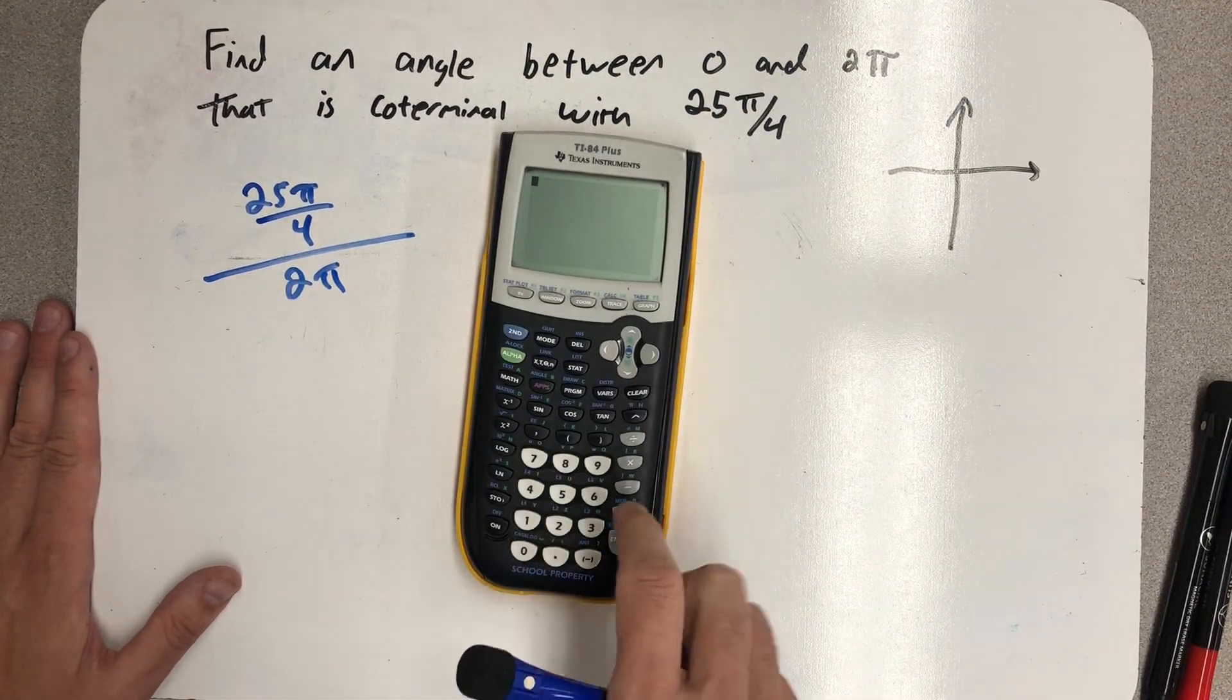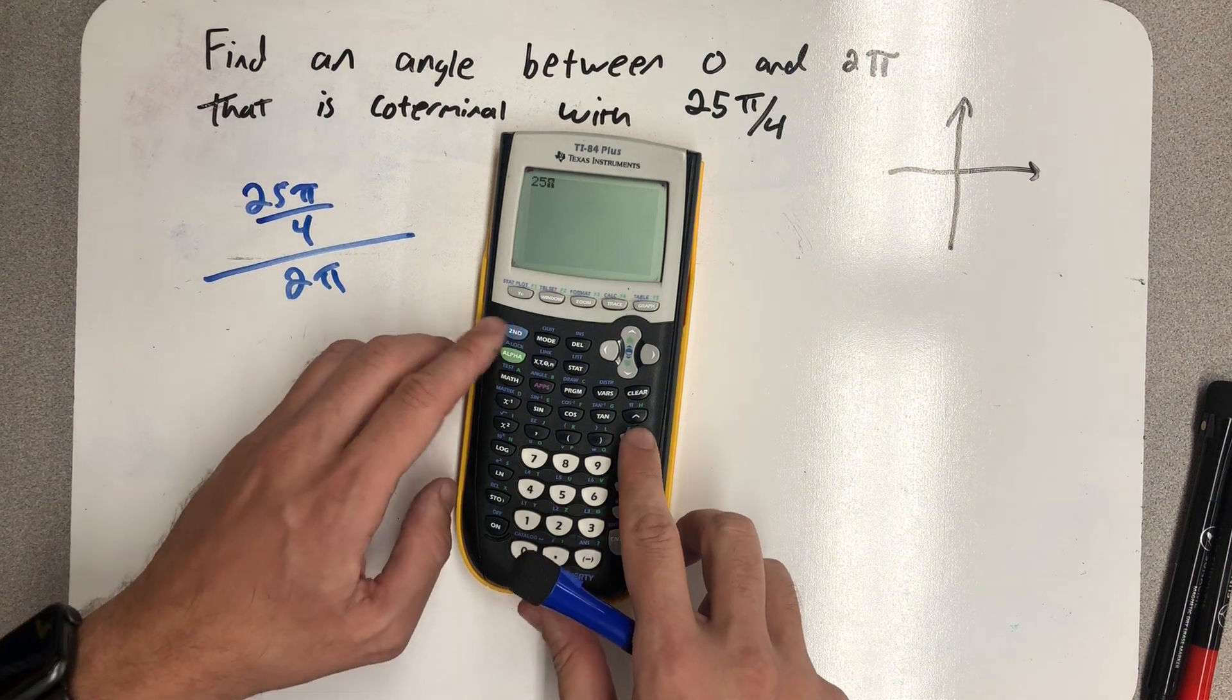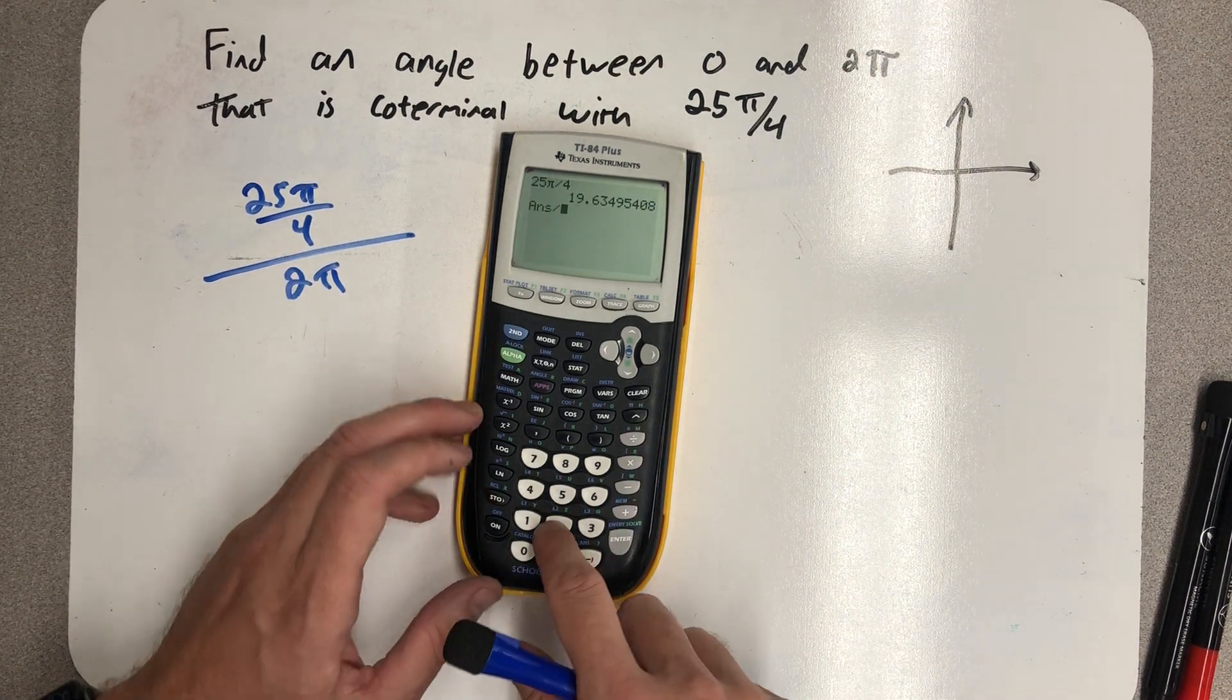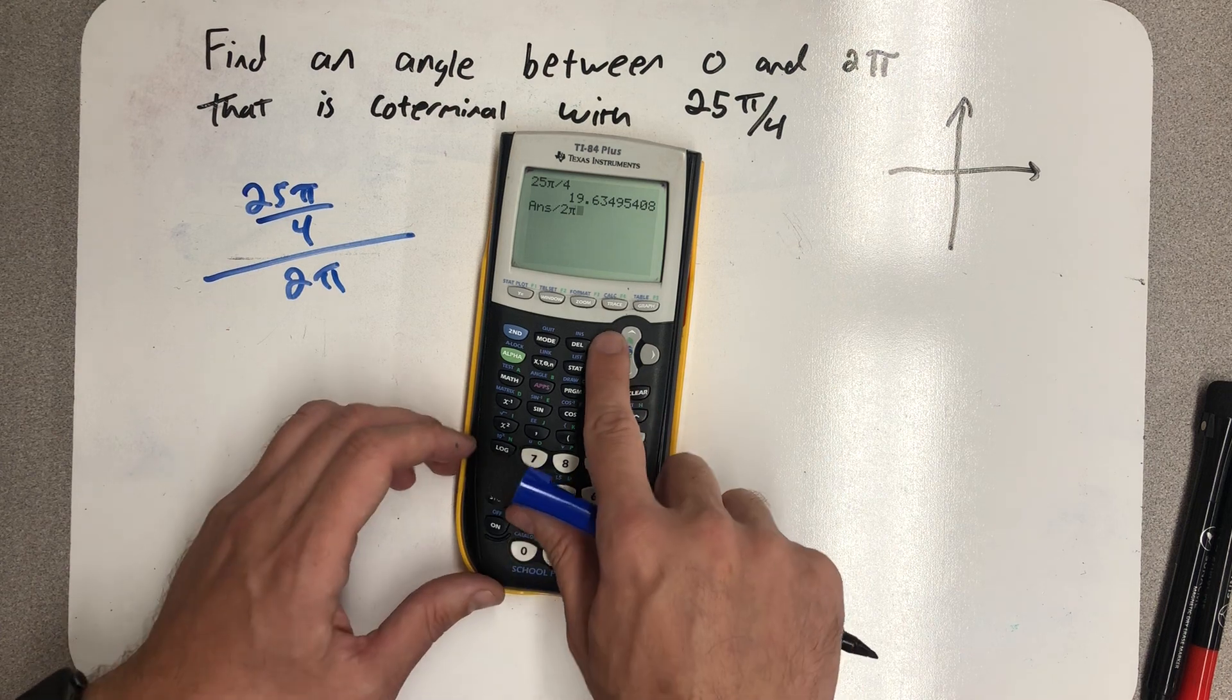And so I'm going to grab my TI-84 and I'm going to think about 25π over 4, and I'm going to divide that by 2π, just to see how many full revolutions it is.